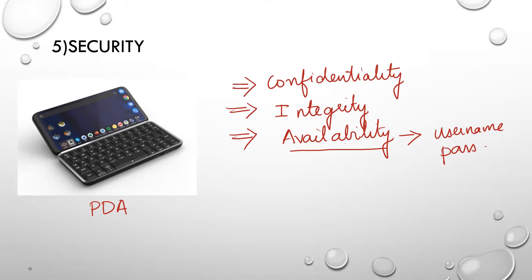Some data is accessed only by the administrator — it cannot be accessed by all users. That is called confidentiality. Only administrators can access that data. The last one is integrity: all users can see data but they cannot change it — it is read-only and cannot be modified.